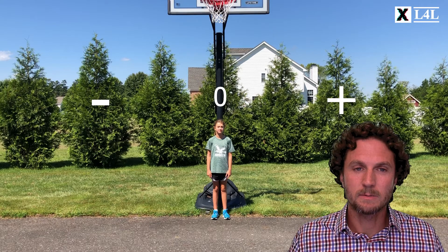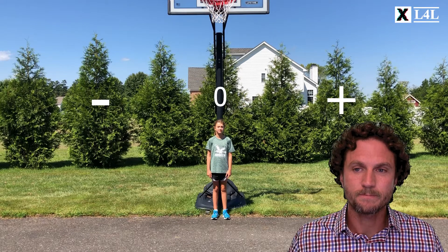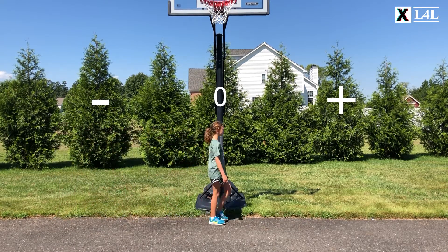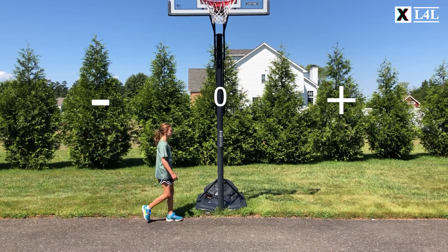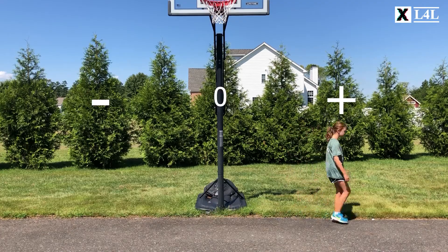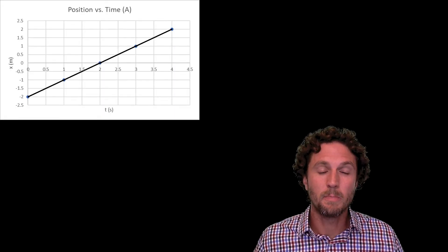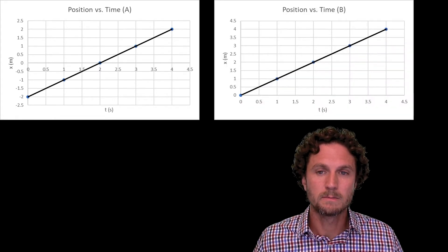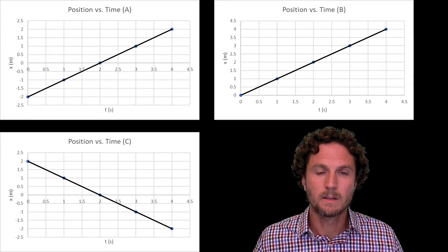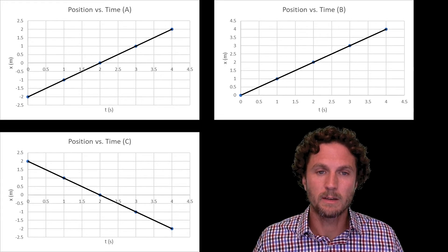Take a look at Madison's motion here. What we're going to do is try and find a graph that we can match. Was Madison's motion best represented by this position versus time graph A, graph B, or graph C? Take a second if you need to pause and go back to watch the video again, but pick which graph you think best represents her motion.